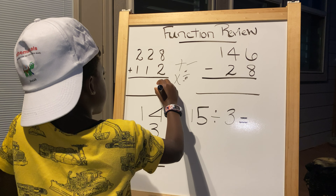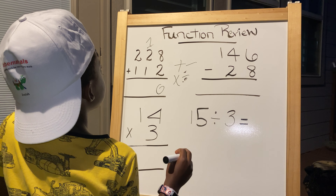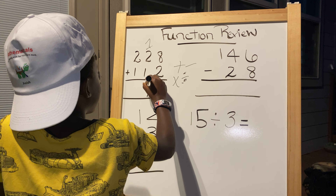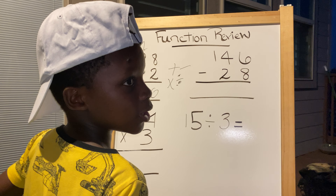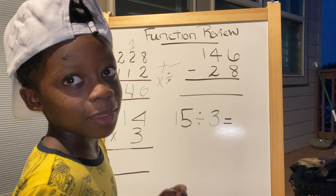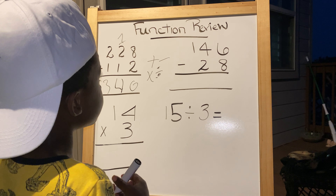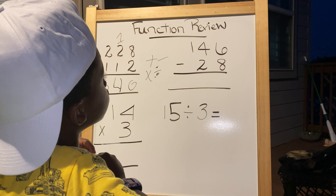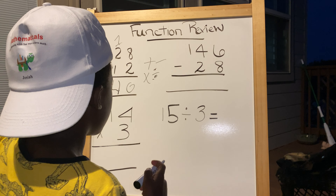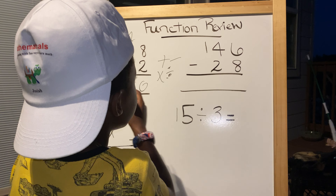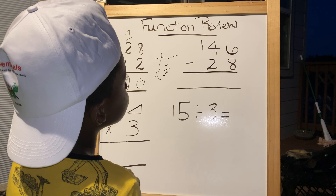Eight plus two equals ten — you guys know the drill. Two plus two equals four. Two plus one — easy peasy lemon squeezy.